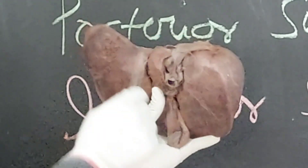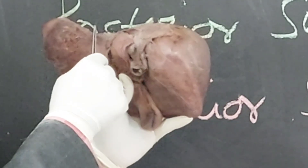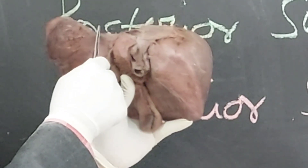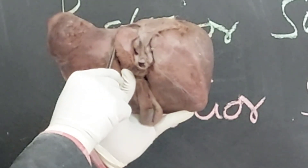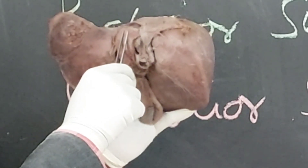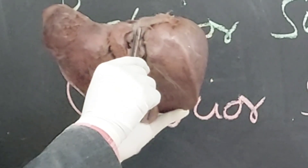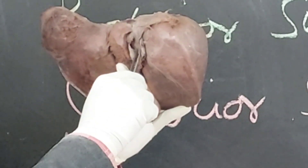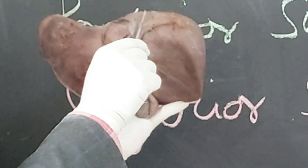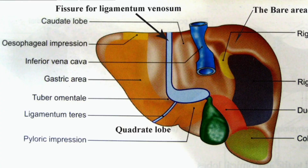Repeating once again the relations on the posterior surface: esophageal impression, then fissure for ligamentum venosum, then caudate lobe, then the groove for inferior vena cava, then the bare area of the liver. That is the posterior surface.